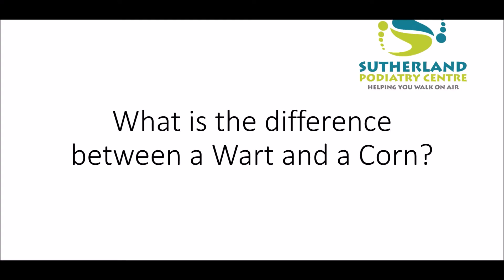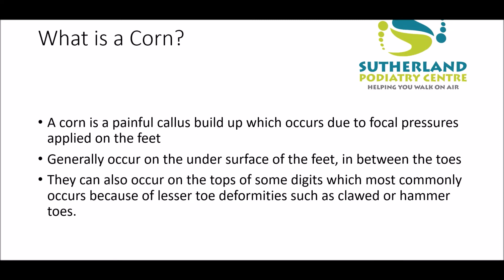A common question that I get asked in clinic is: what is the difference between a wart and a corn? A corn is a painful callus buildup which occurs due to focal pressures applied on high pressure areas on the feet. They generally occur under the surface of the feet or between the toes, and can also occur on the tops of some digits due to lesser toe deformities such as clawed or hammer toes.